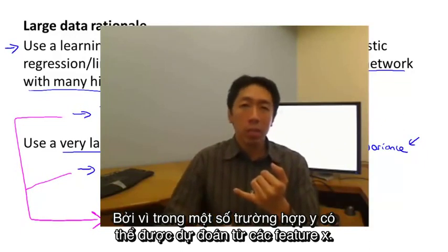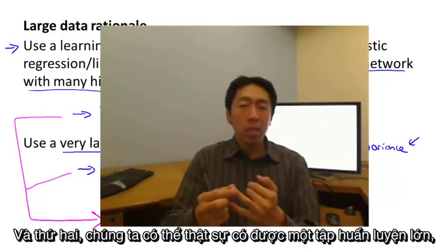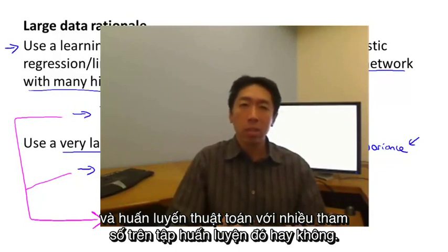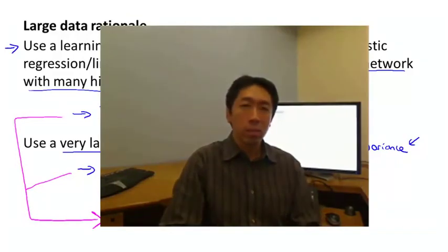Because that's sort of a certification that y can indeed be predicted accurately from the features x. And second, can we actually get a large training set and train a learning algorithm with a lot of parameters in that training set? And if you can do both, then that will often give you a very high performance learning algorithm.